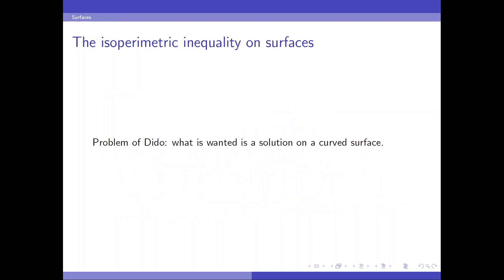And finally, let's look at the isoperimetric inequality on surfaces. So, we all live on Earth, which is a sphere instead of a plane. Therefore, the problem of Dido is actually a problem on a curved surface, at least a sphere.